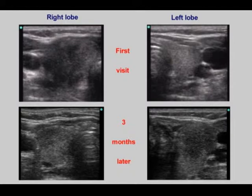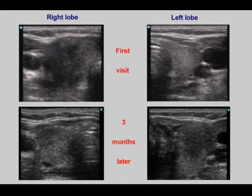The complaints were localized to the right thyroid at the first investigation, while the left lobe was uninfluenced. The size and the hypoechoic areas of the right thyroid decreased, while those of the left lobe increased three months later.